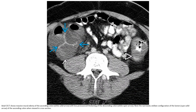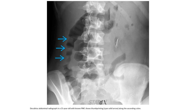Contrast CT shows massive mural thickening of the ascending colon with less pronounced thickening of the descending colon. Note the narrowing of the lumen and the accordion configuration. A barium study in a 15-year-old with pseudomembranous colitis shows some thumbprinting along the ascending colon.